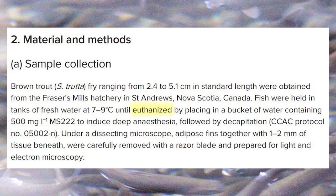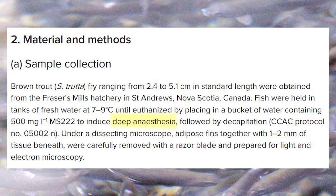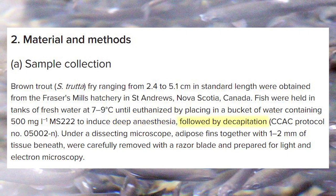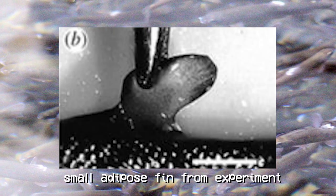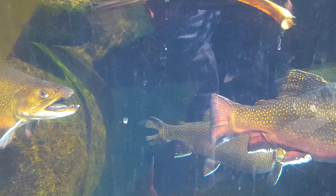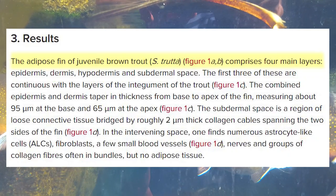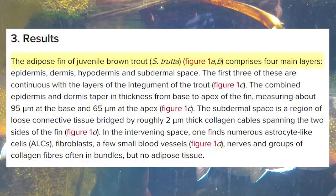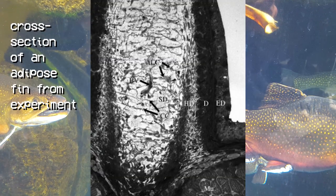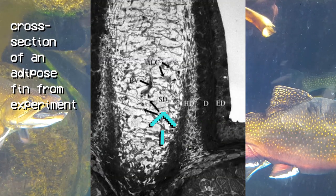These juvenile trout were euthanized by first being placed under deep anesthesia, and then each was decapitated. Adipose fins were then removed and prepared for electron microscopy. In their examination, Buckland and colleagues found that the adipose fin of juvenile brown trout comprises four main layers: epidermis, dermis, hypodermis, and subdermal space.